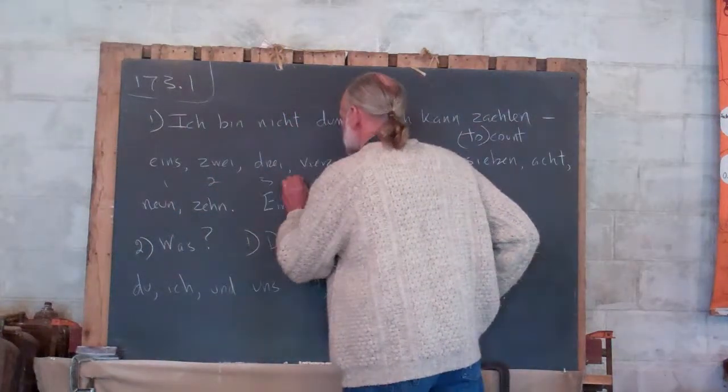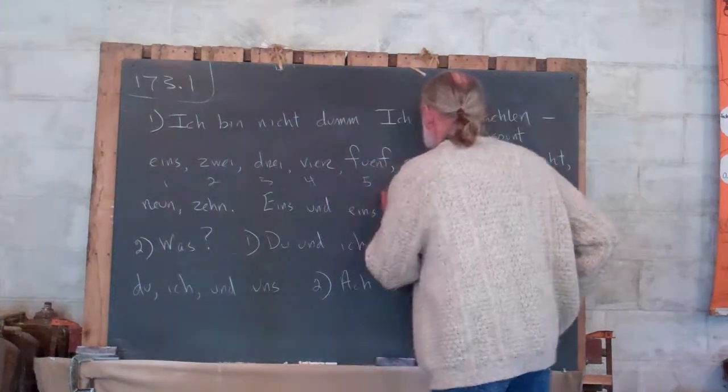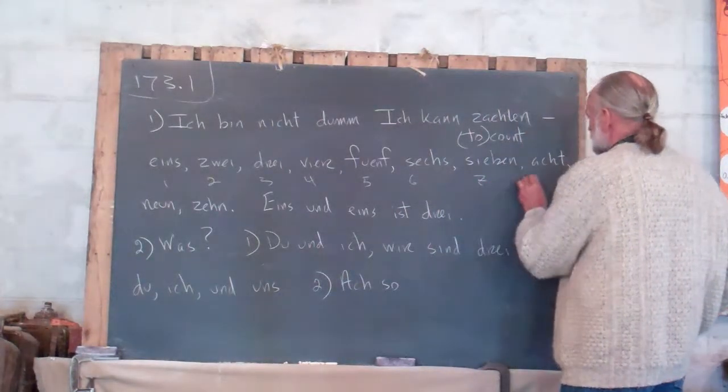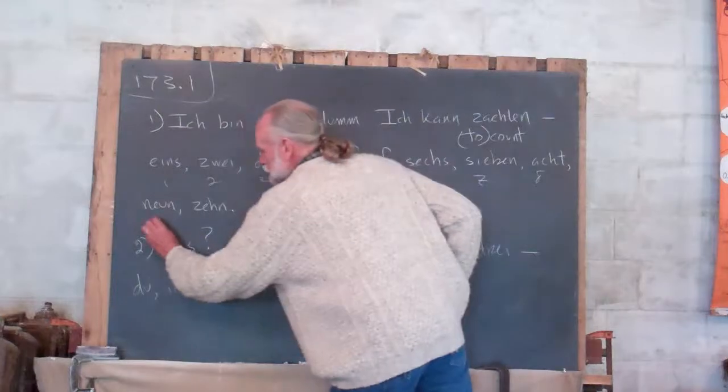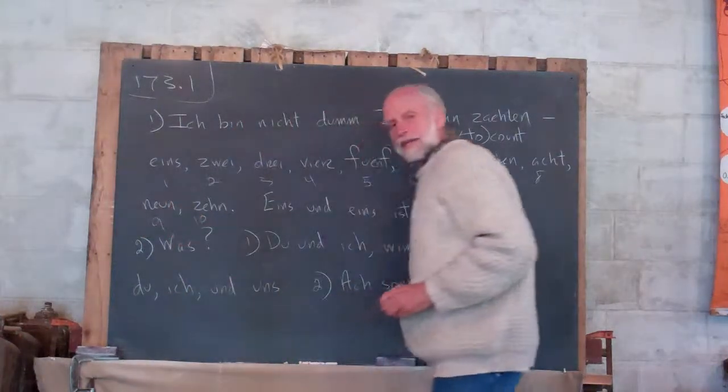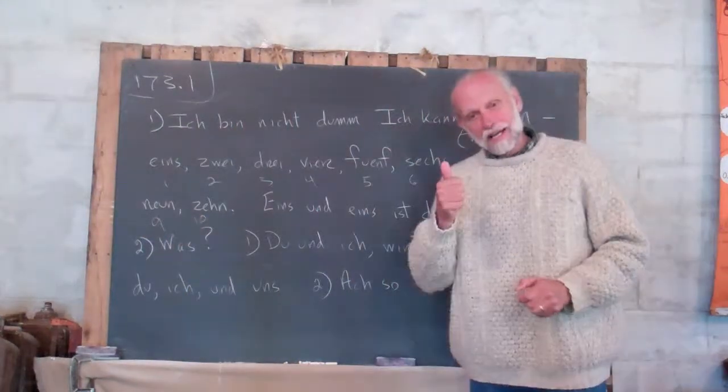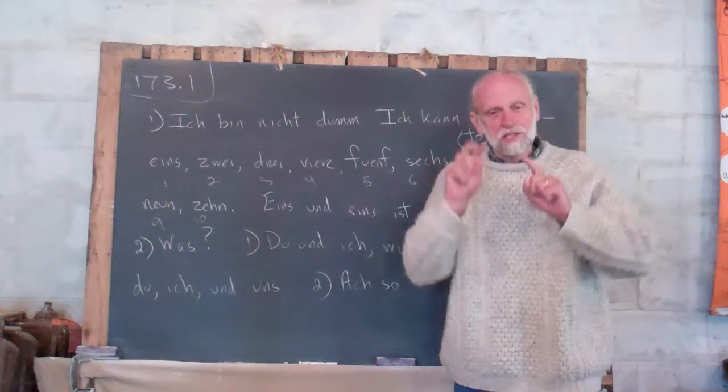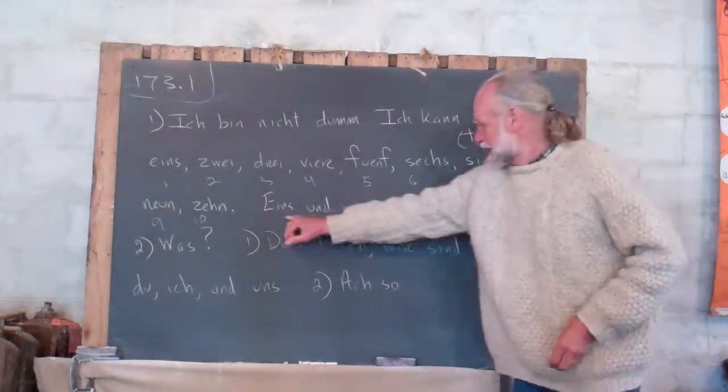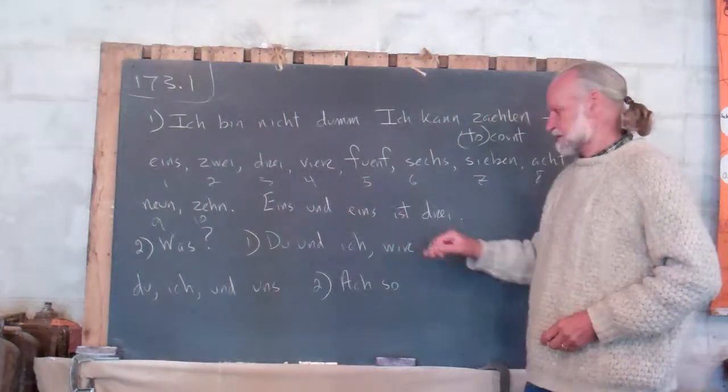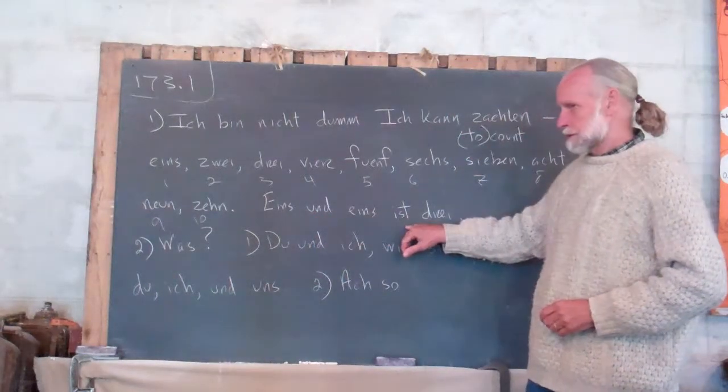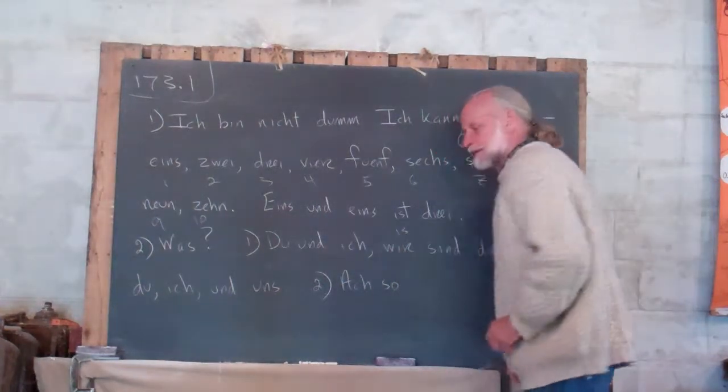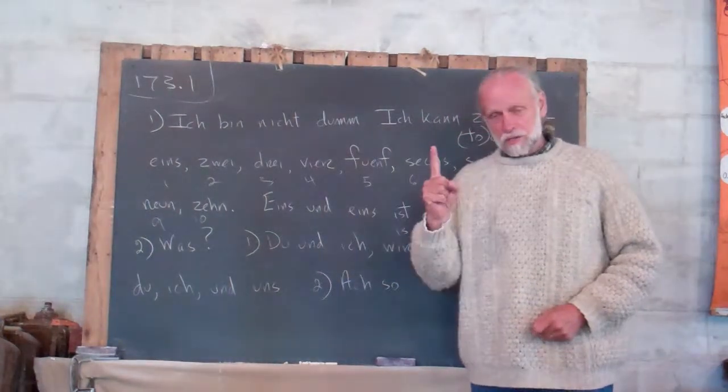Eins, zwei, drei, vier, fünf, sechs, sieben, acht, neun, zehn. And then he goes on to say eins und eins ist drei. I'm not sure we have that yet. That's the word is. Ist drei.